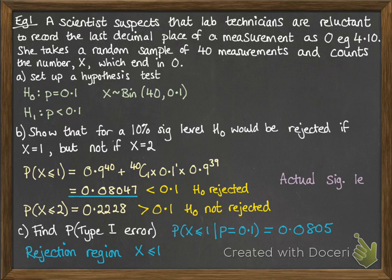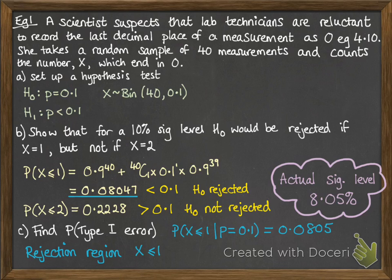This means our actual significance level wasn't the 10% in the question, it was 8.05%. We can't get closer than that to 10%. If you go to X=2, it goes above 10%.